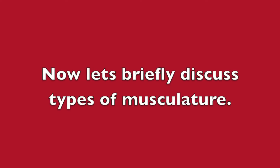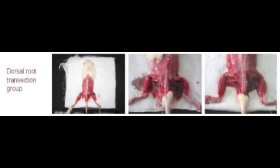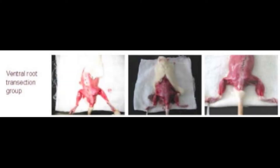Now let's briefly discuss the types of musculature. The dorsal musculature moves the vertebral column and head. The ventral musculature is in layers of muscle that support the thoracic and abdominal walls. It also supports breathing and body weight transfer to the pectoral girdle and appendages.